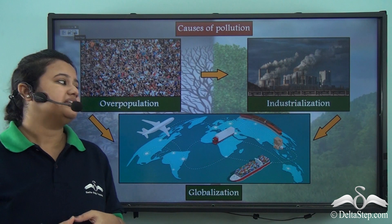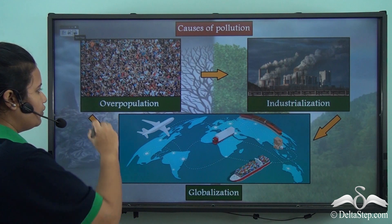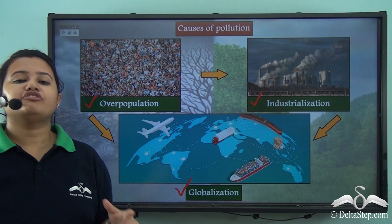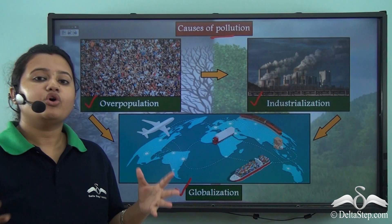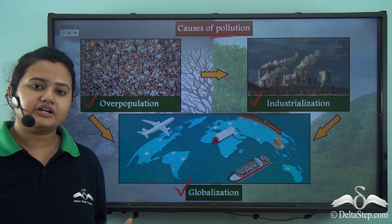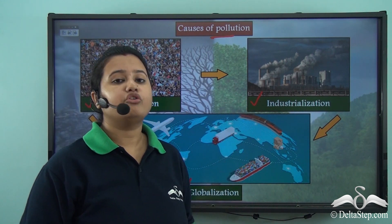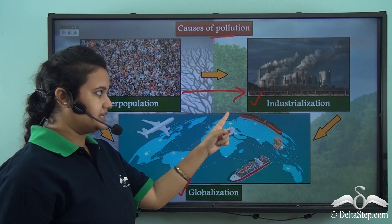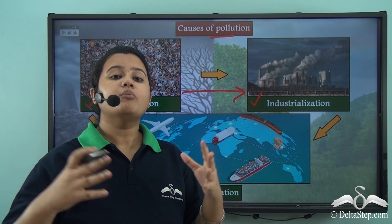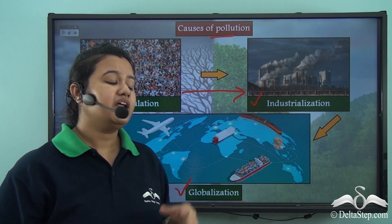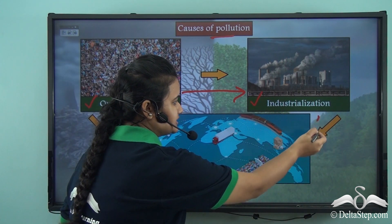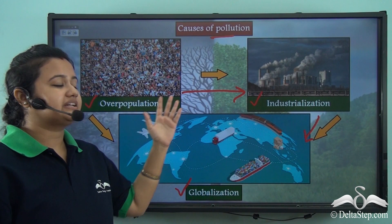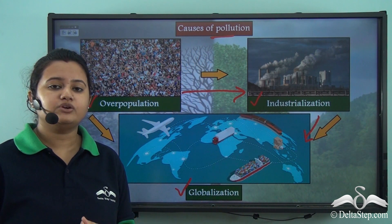These are the three important factors of pollution: overpopulation, industrialization and globalization. These three factors are interlinked. Overpopulation leads to increase in demand for agricultural and industrial goods, so more industries have to be set up — thus overpopulation leads to industrialization. Enhanced industrialization leads to more production of goods, which are then sold to different countries. Thus industrialization leads to globalization, that is trade of goods among different nations. One factor leads to the other — the different causes of pollution are interlinked.